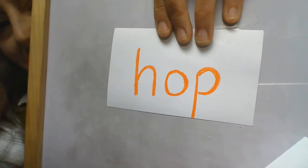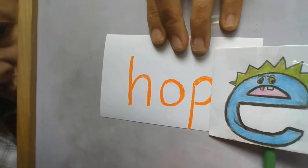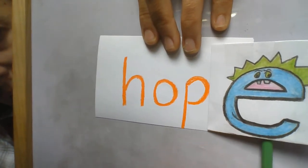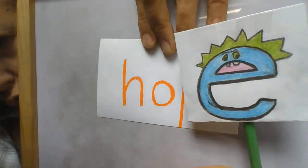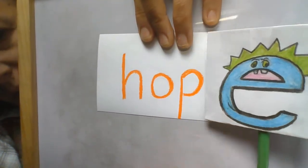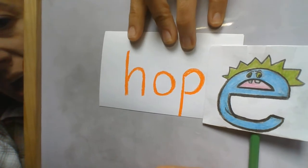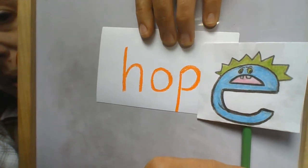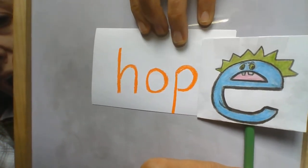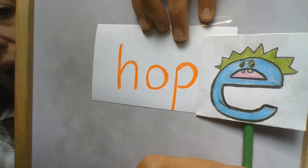But what if that bossy E shows up again? He showed up at the end of the word and he said to O, say your name. And O had to say his name. H, oh, p, hope. Hope. What's the word? Hope.